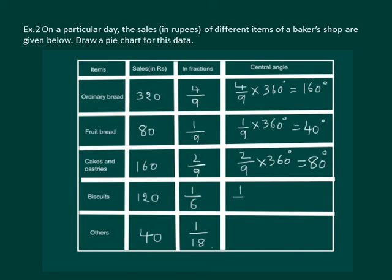1 by 6th of 360 degrees is equal to 60 degrees, and 1 by 18th of 360 degrees is equal to 20 degrees.